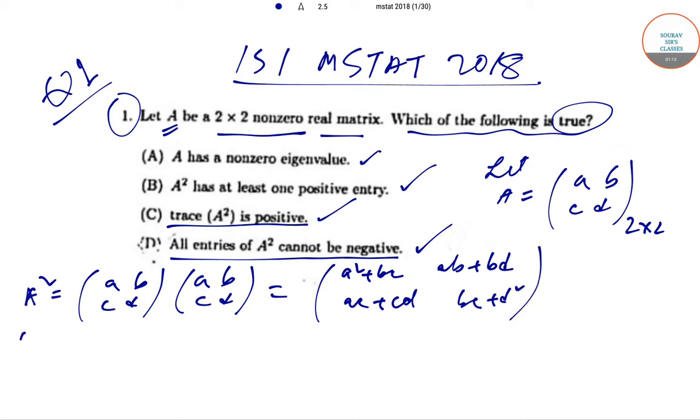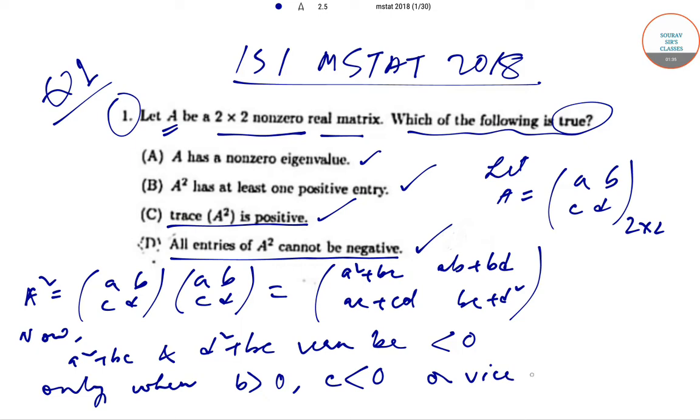Now a²+bc and d²+bc can be less than zero only when bc is less than zero or vice versa. Since we know that